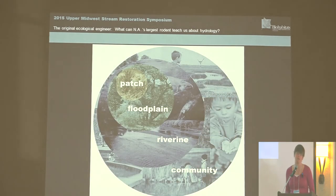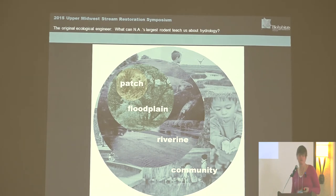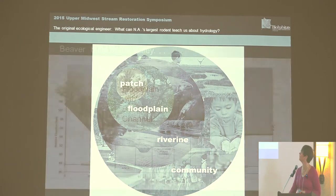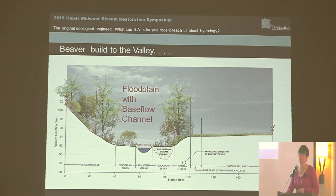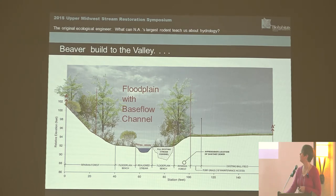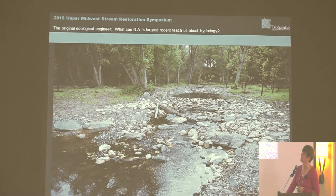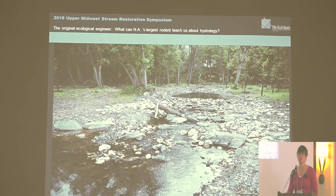What happens if you're in a community where they don't want beavers but you still want some of the benefits of how beaver restore a stream? One way is to look at things at a slightly larger scale than a single reach. Beaver build to the valley — on a floodplain scale. One way we've found successful is through building a floodplain system with a base flow channel. One approach is raising the invert of the stream by constructing riffles down through the stream valley along the existing alignment.